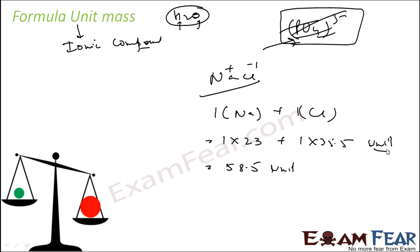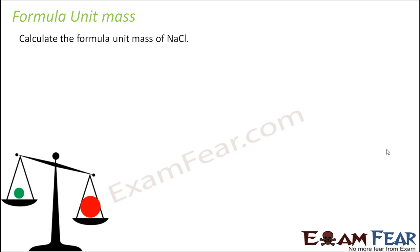You add it 58.5. So it's just a new term. Thus now we found that the value of formula unit mass for NaCl, 23 and this is 35.5, so add this 58.5 unit.